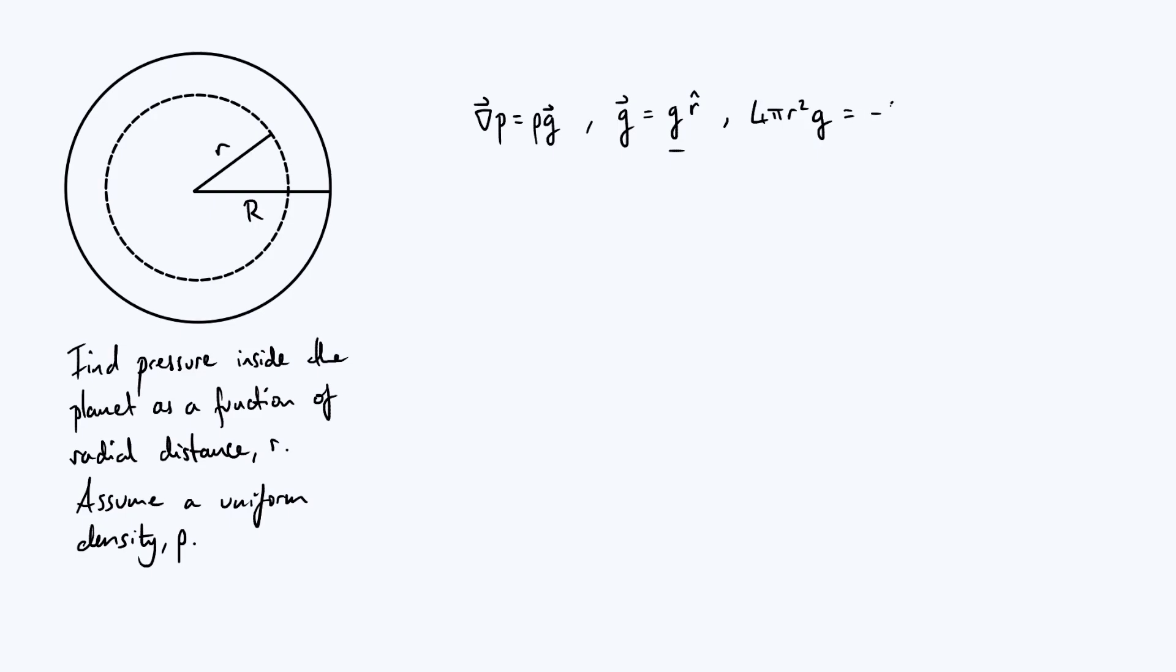And then the right hand side of Gauss's law is just going to be minus 4πG times, let's call it m_enc, so the enclosed mass within the sphere. Then of course 4π's cancel and you conclude that g is minus big G times m_enclosed divided by r².